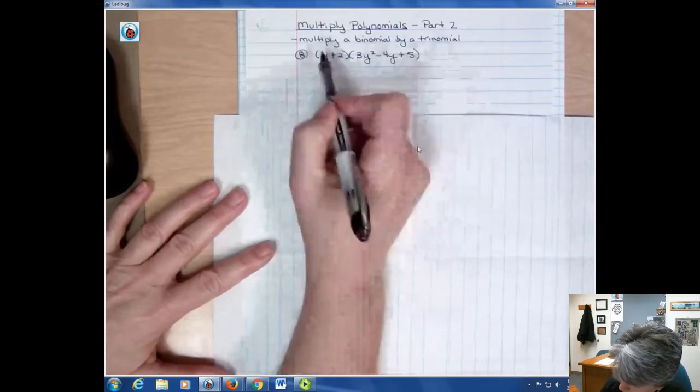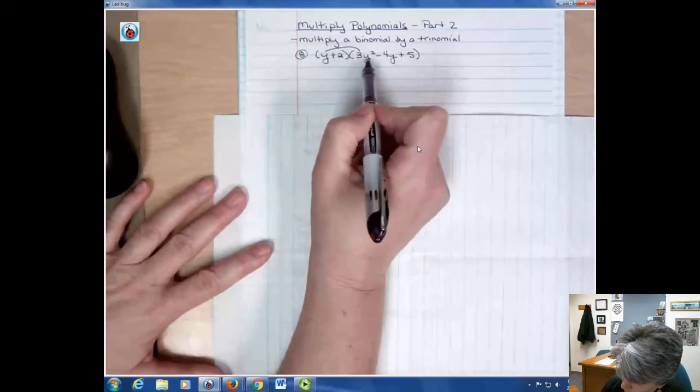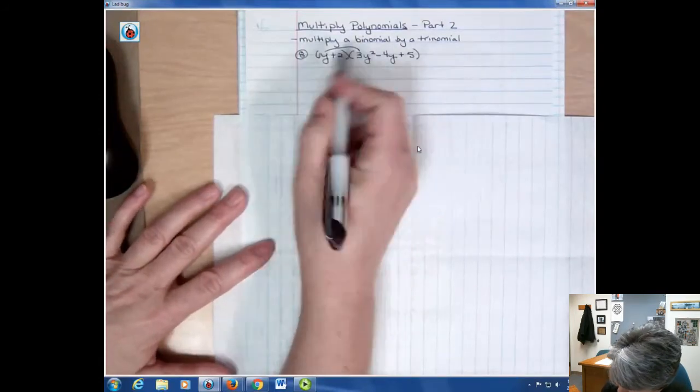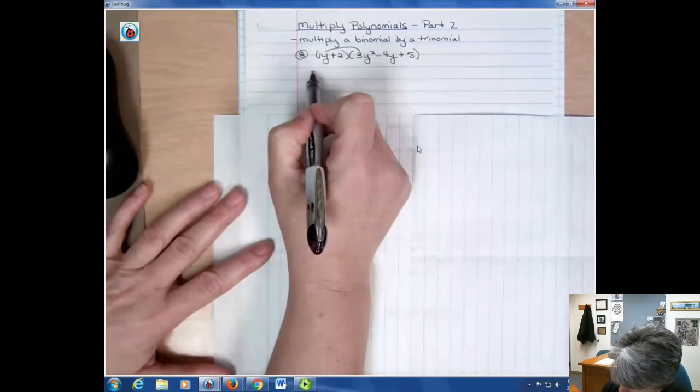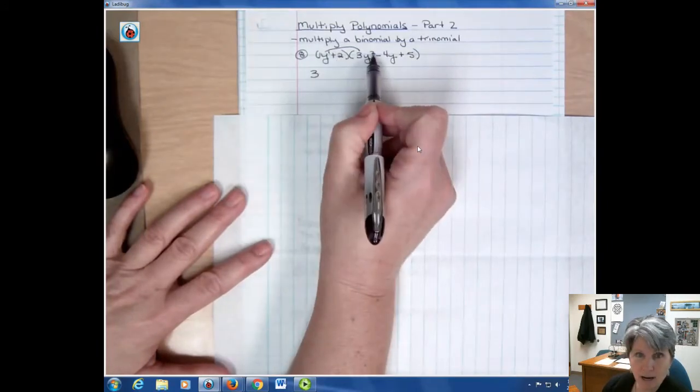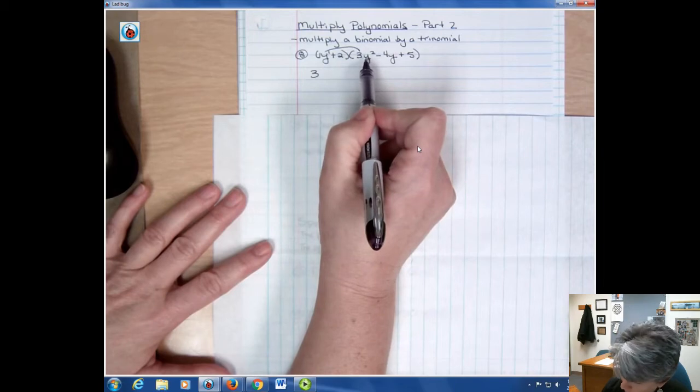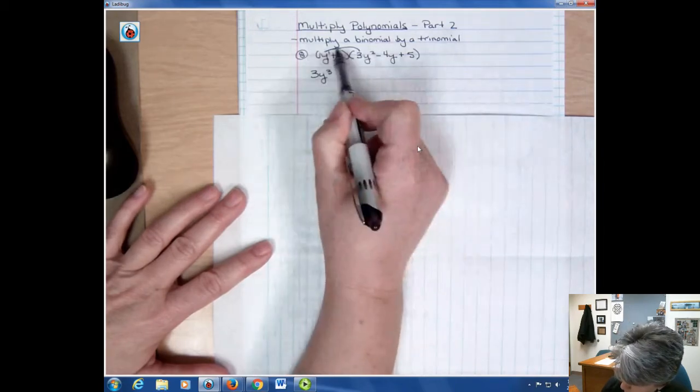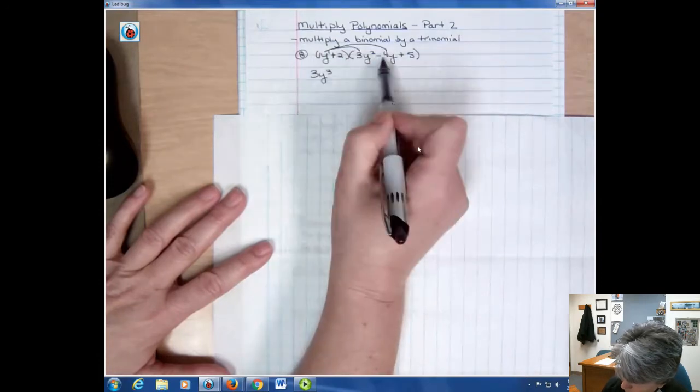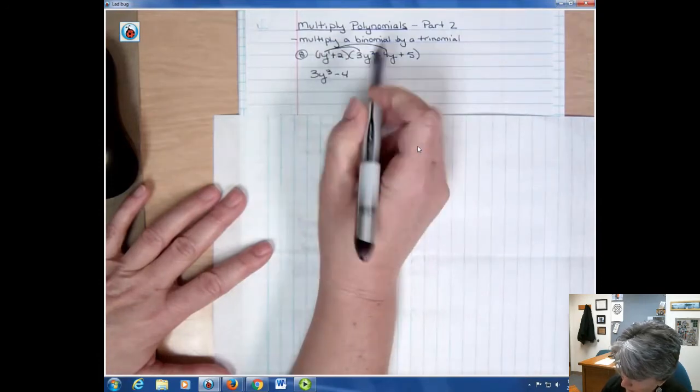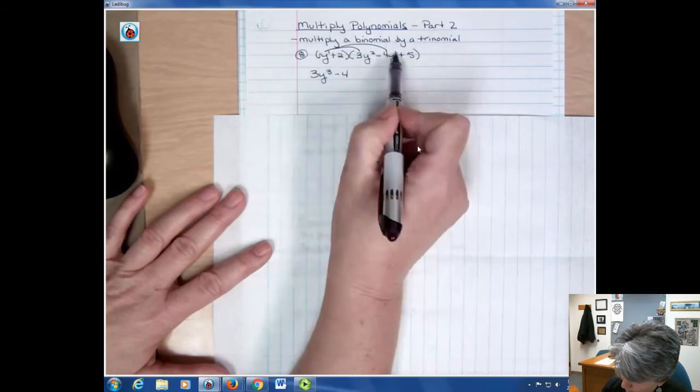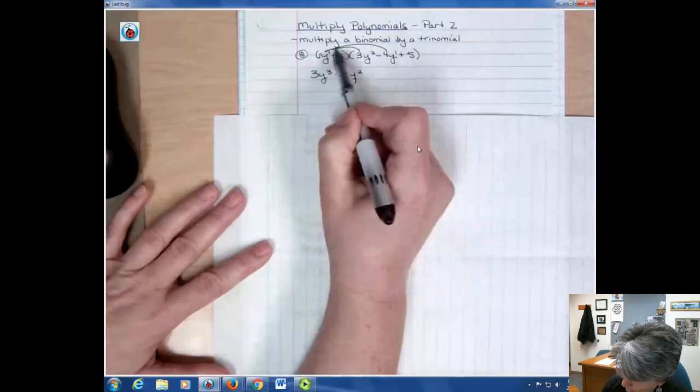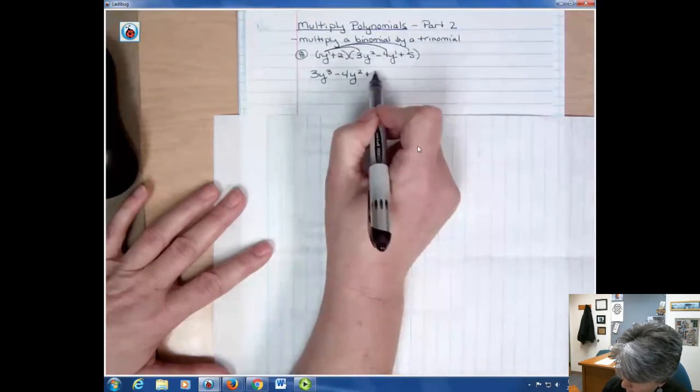So starting with the y, y times 3y squared. Well my coefficient of the y is 1, so I have 1 times 3 is 3, and then y to the first power and y to the second power. I add those powers together to get y to the third. Then I'm going to multiply this. I have 1 times negative 4, which is negative 4, and I have 1y plus another y, which gives me y squared. And then y times 5 is just going to be 5y.